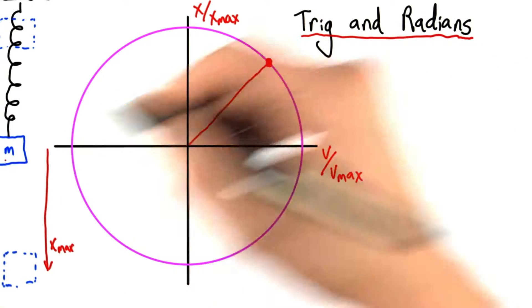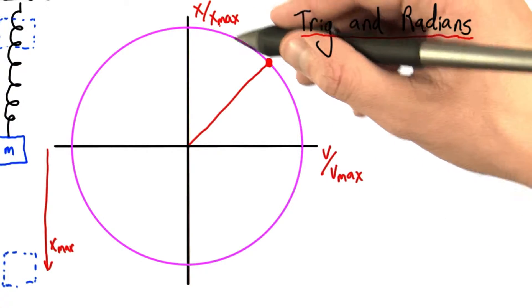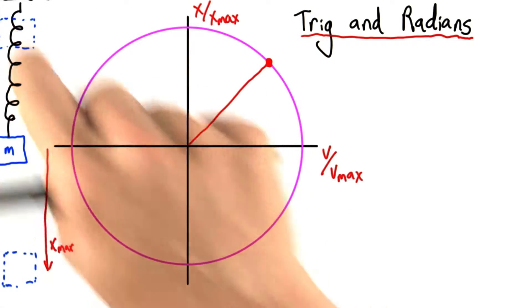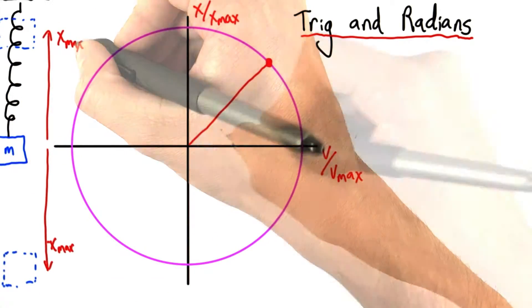So let's say our particle is here, our mass is here. That's almost all the way at x max, and it's moving upwards. So that would be maybe somewhere here and going up. This should be negative x max. That's positive.